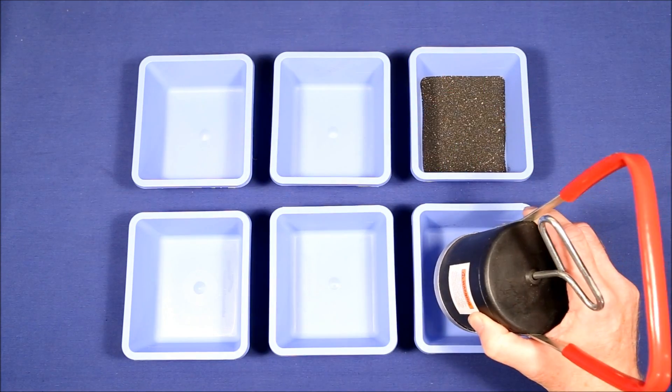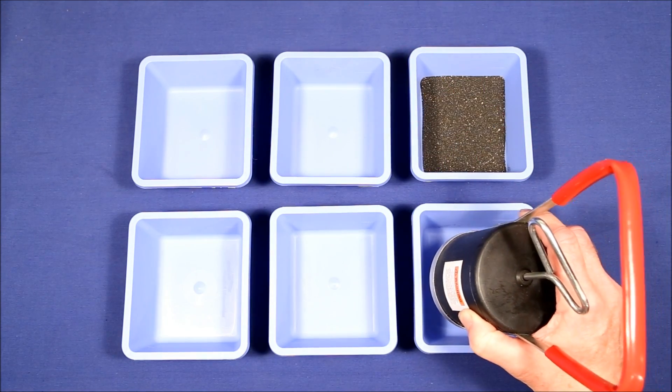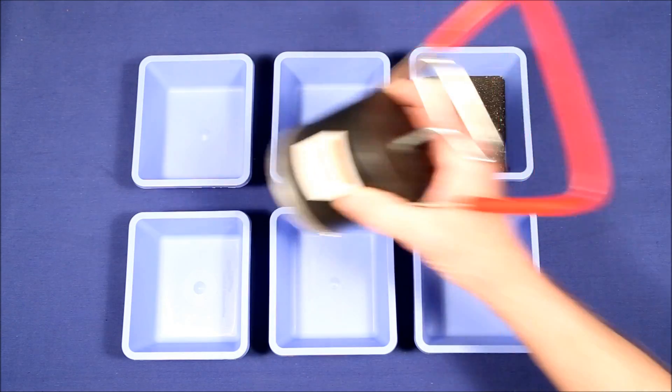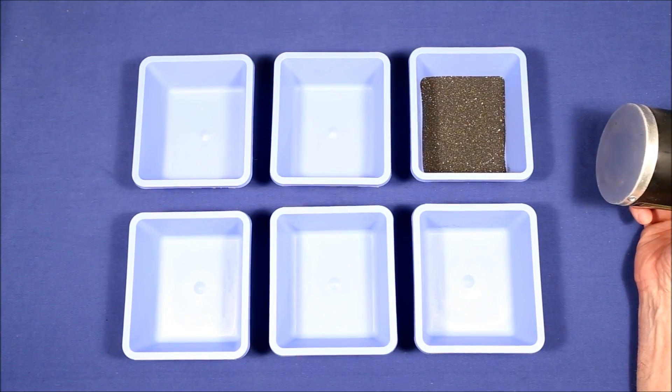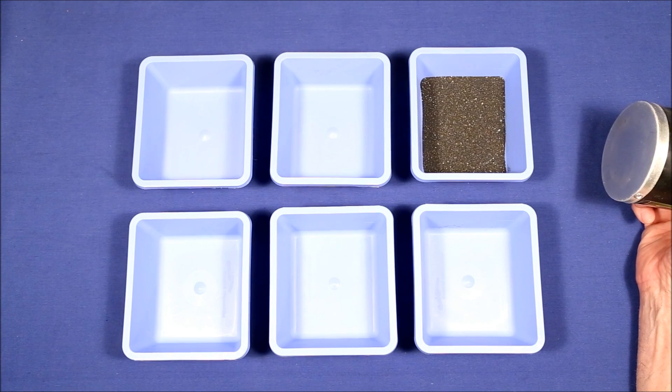Usually, by the time you get to the sixth bin, all of the gold should have fallen out in these earlier ones. And we'll be able to see if that really happens. Here we go.